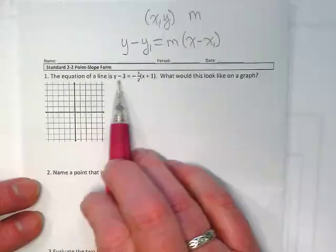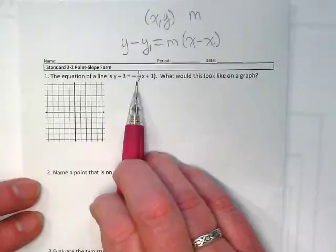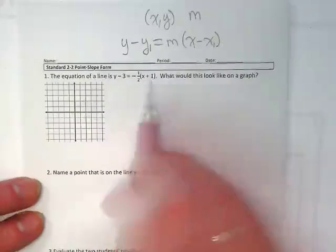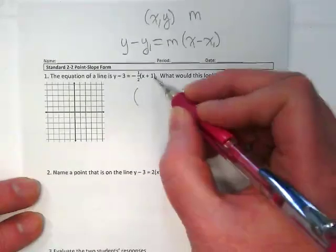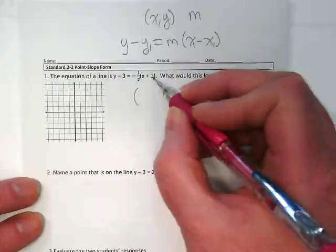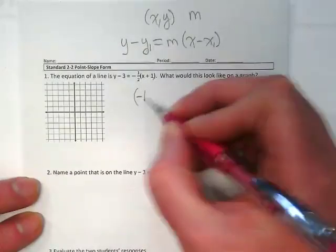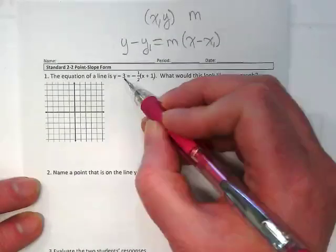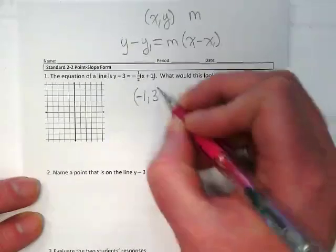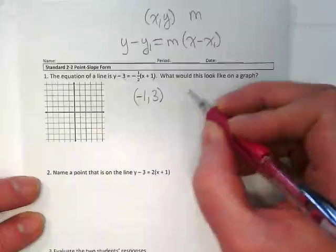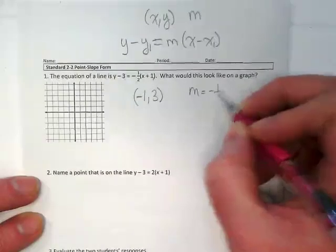The equation of this line is y minus 3 is equal to negative 1 half times x plus 1. So the first thing I want to do is get my point. That is a positive 1 in the equation, which means it's a negative 1 in my pair. And then I have 3 for my y. And my slope is negative 1 over 2.